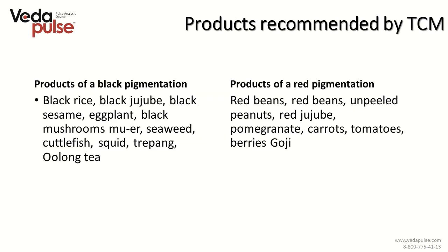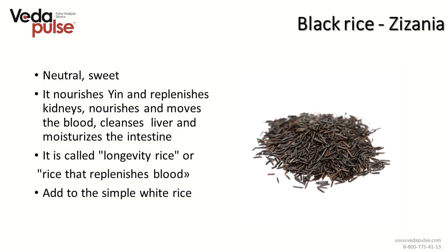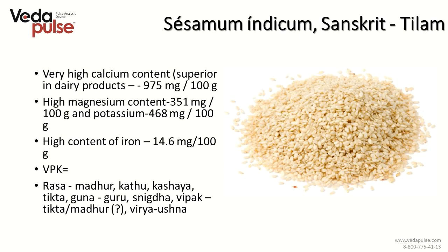Traditional Chinese medicine recommends eating products of black and red pigmentation as these very products provide iron to the body. Such products include black rice, black jujube, black sesame, eggplant, black mushrooms, seaweed, cuttlefish, squid, pu-erh tea, red beans, unpeeled peanuts, red jujube and so on. One essential product is black rice or zizania, an irreplaceable companion for people suffering from blood emptiness. It nourishes yin and replenishes kidneys, nourishes and moves the blood, cleanses the liver and moisturizes the intestine — called 'longevity rice' or 'rice that replenishes blood.'